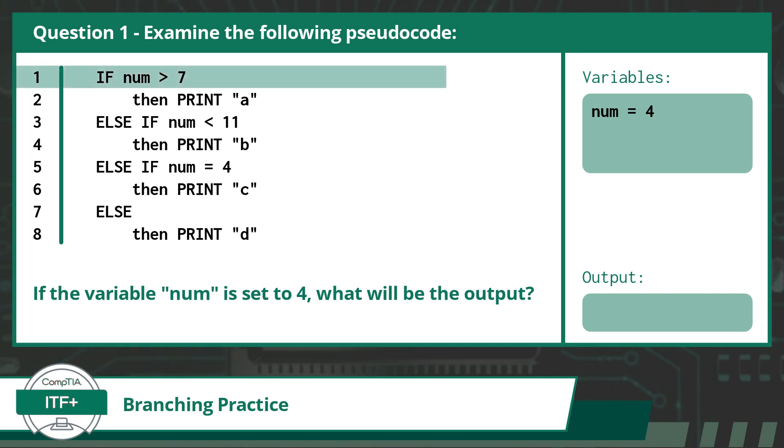In line 1, we have an if statement, so we know this is the first part of a larger branching statement. Your first task is to evaluate if num is greater than 7, which is a false statement, as num is equal to 4 and 4 is not greater than 7. So we head down to the next branch statement on line 3. Here we evaluate if num is less than 11. This is true, as num is equal to 4 and 4 is less than 11. So this is the branch we will execute.